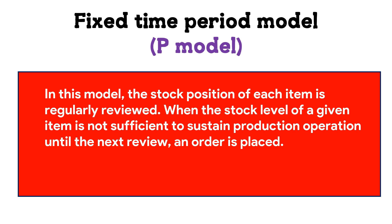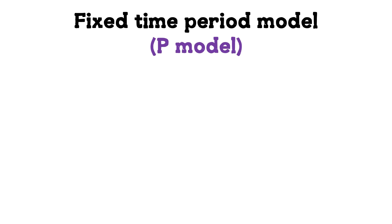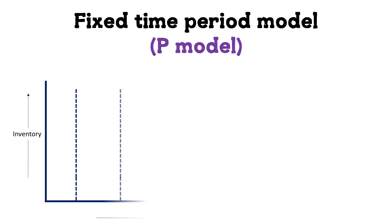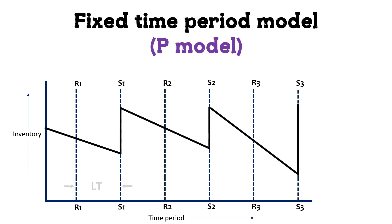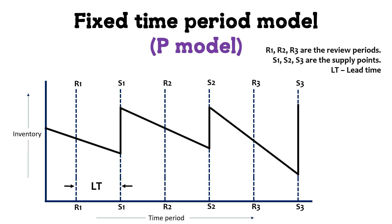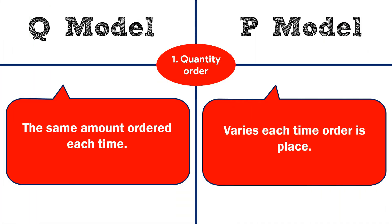The diagram of the P model shows R1, S1, R2, S2, R3, S3 — where R1, R2, R3 are review periods, S1, S2, S3 are supply points, and LT is always the lead time. Whenever a particular review period arrives, the stock is reordered. So in the P model, stock is reordered after a fixed time period.